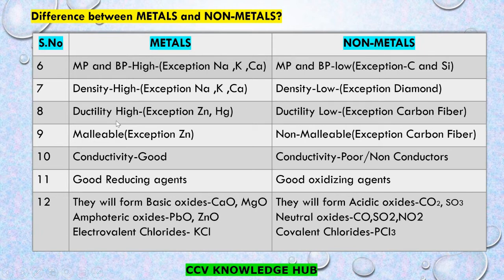What is ductility? Ductility is a property in which a metal or non-metal can be drawn into wires. Here is an exception: zinc and mercury have low ductility. Non-metals have low ductility. Here is also an exception: carbon fiber can be drawn into wires.